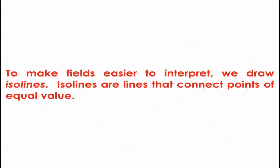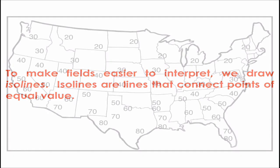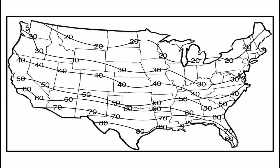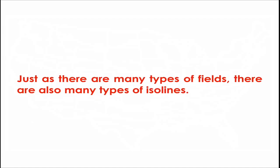To make reading a field map easier, we use iso lines. Iso lines are lines that connect points of equal value. On a field map, using iso lines makes it much easier to determine where one air temperature ends and the next begins. The bands running from west to east on this map give you an idea of where the warmer regions are and the colder regions. Just as there are many types of fields and field data, there are also many types of iso lines.